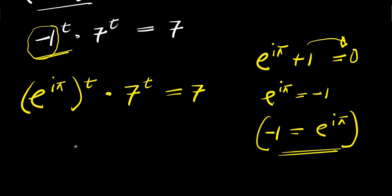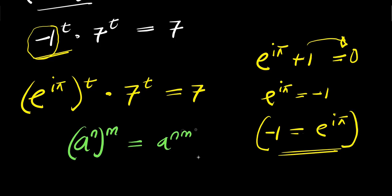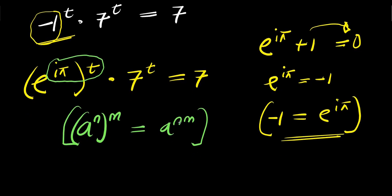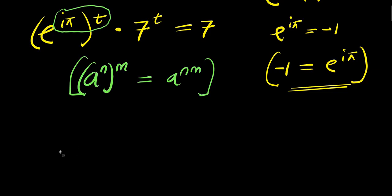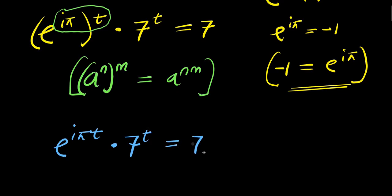So right now, if you consider this identity — if you have a to the power of n times m, this equals a to the power of n times m — we are going to have e to the power i times pi times t, times 7 to the power of t, equals 7.